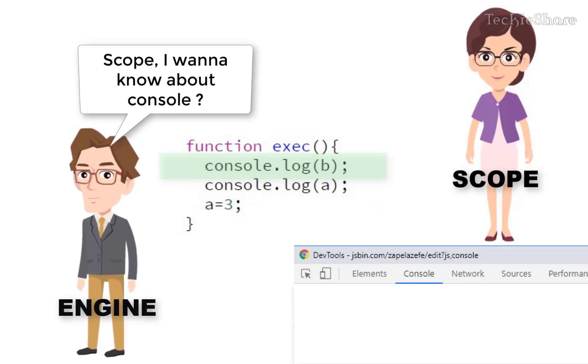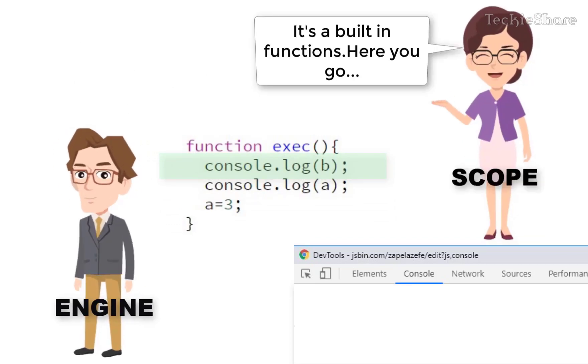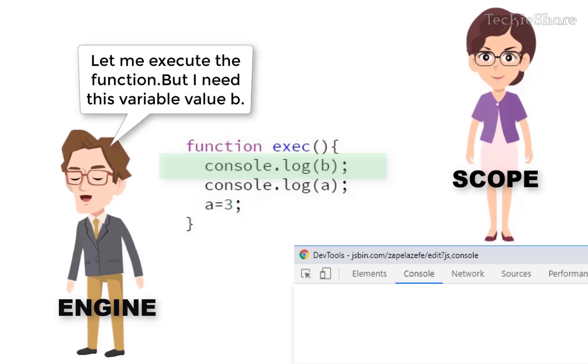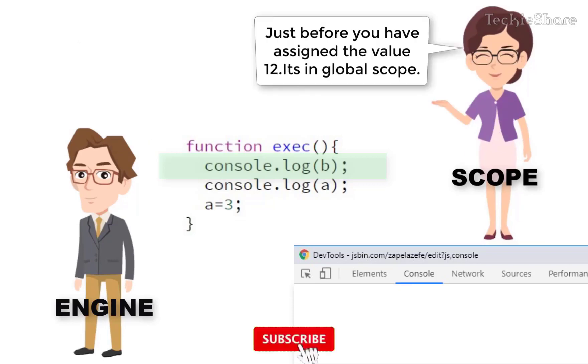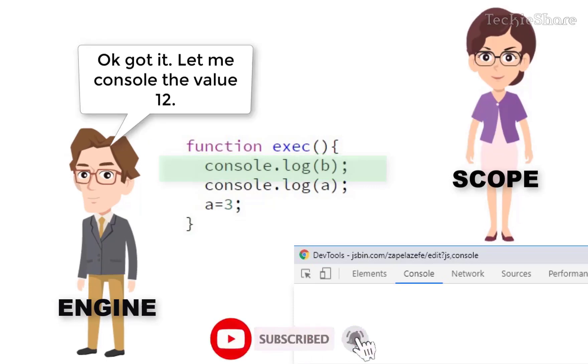Scope, I want to know about console. It's a built-in function. Here you go. Let me execute this function. But I need this variable B. Just before you have assigned the value 12. Got it. Let me console the value 12.